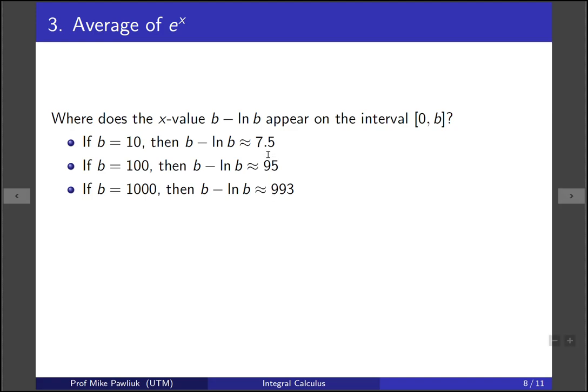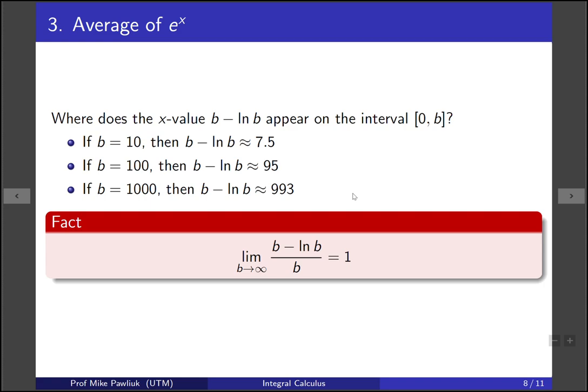Now you can see that it looks like this number is approaching this number, so b minus log b appears to be approaching b. Now the way to make this formal is to talk about limits, and the limit you want to look at is this one: (b minus log b) over b, the limit as b goes to infinity is one. So you can check that later.